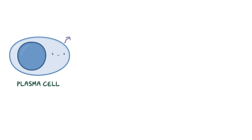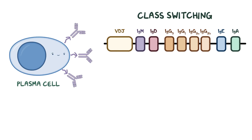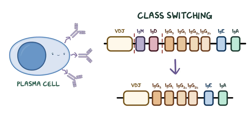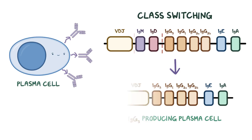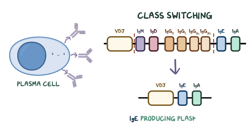Some of these B cells turn into plasma cells, which produce IgM, whereas other plasma cells undergo class switching. Class switching is the process of DNA segments being sliced, with pieces removed, and the remaining pieces get stuck back together so that ultimately the gene itself encodes a different type of heavy chain. If only some of the DNA is cut out, the result might be an IgG3-producing plasma cell, and if a lot is cut out, the result might be an IgE-antibody-producing plasma cell.